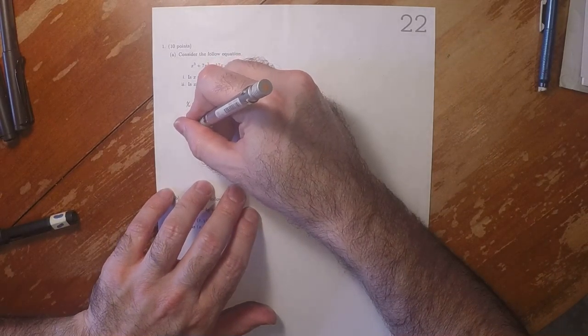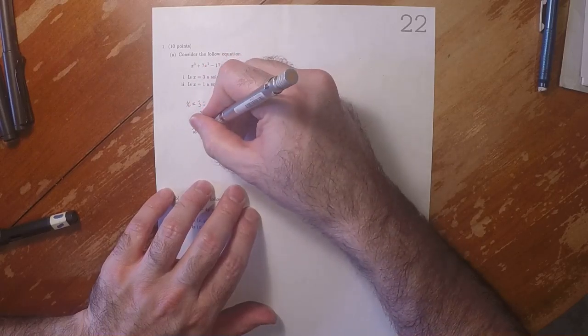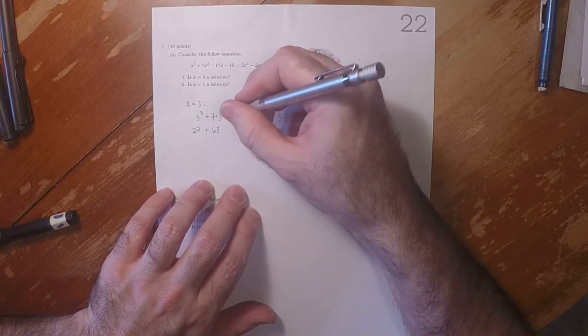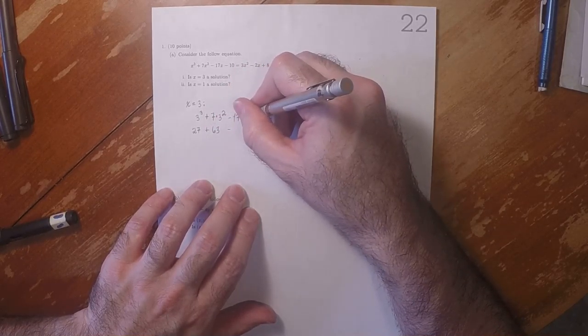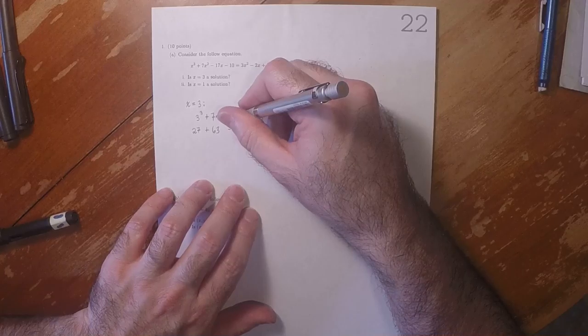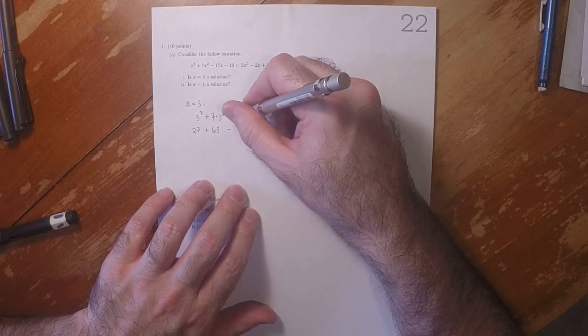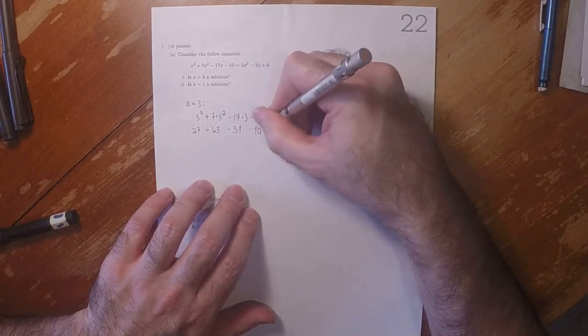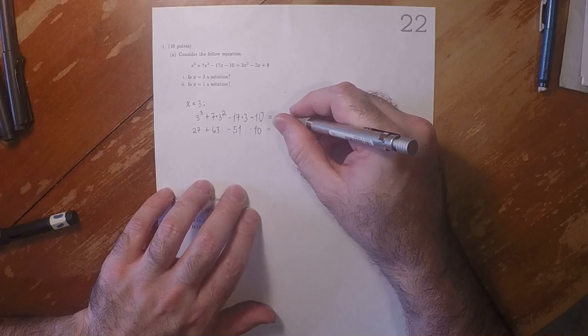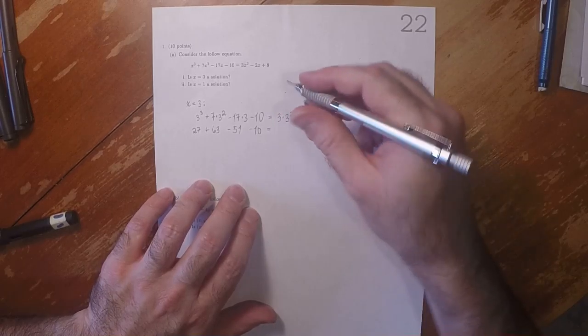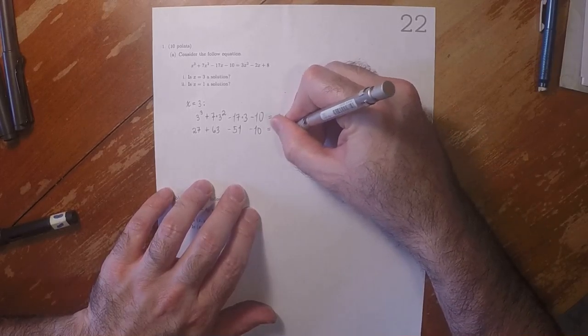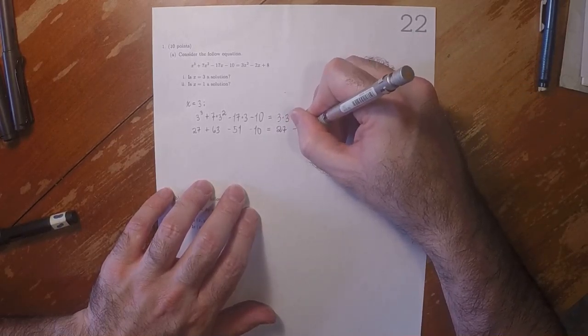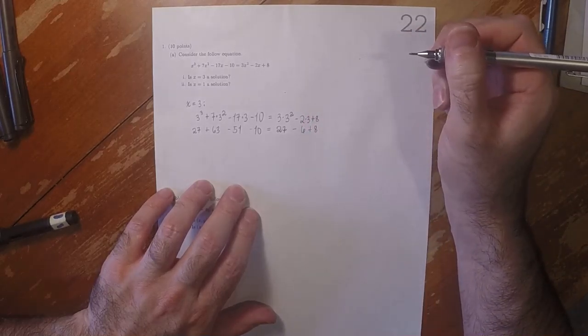So that would be 27 plus 7 times 9 is 63 minus 17 times 3 is what? 30 and 21 is 51 minus 10 is equal to, 3 times 3 squared is 27, minus 6 plus 8.